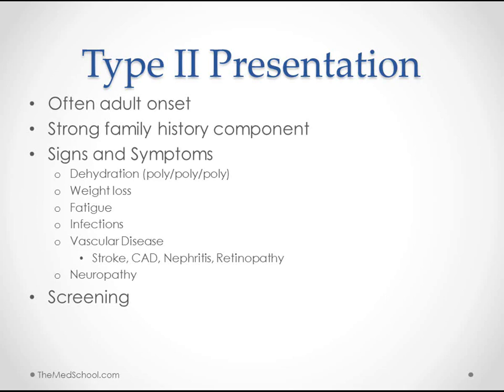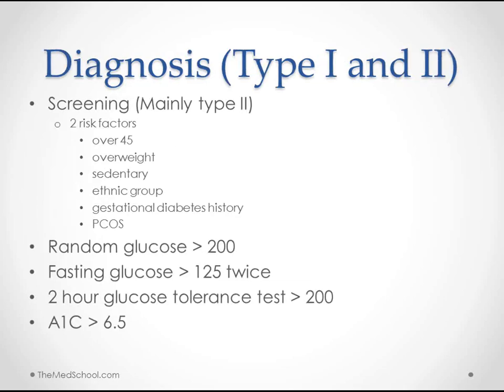Hopefully we're going to catch these people in screening. Screening has been debated on cost-effectiveness, but the ADA recommends screening for anybody with 2 or more risk factors. These include people over 45, overweight, sedentary, of certain ethnic groups — especially Native Americans, African Americans, and Latin Americans — and those with a history of gestational diabetes or polycystic ovarian syndrome. This is a huge chunk of the population; overweight alone accounts for more than a third and rising.